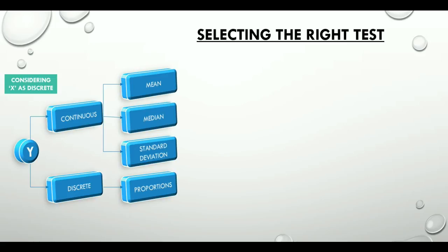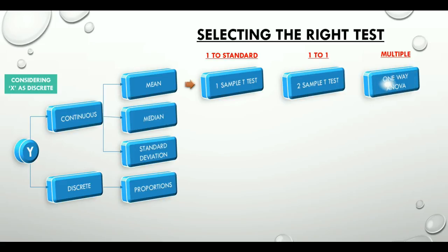Since hypothesis testing is a comparative method to validate the potential causes, it means that we are actually comparing. Comparing what and how? We are comparing one mean to a standard value, one mean with another mean, or comparing multiple means, and so on for median, standard deviation, and proportions. So, the tests are one sample t-test, two sample t-test, and one way ANOVA, when we are comparing means.